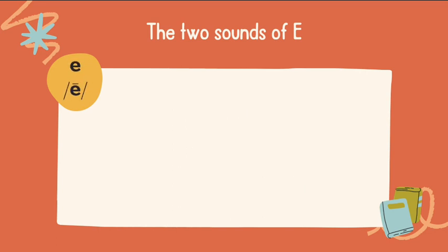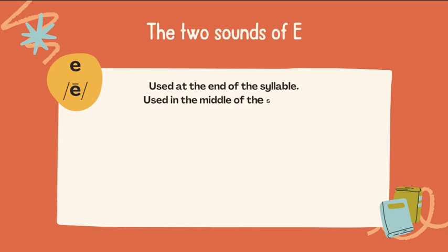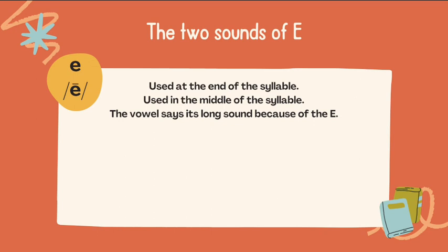The second sound of E is used at the end of the syllable and in the middle of the syllable. The vowel says its long sound because of the E.